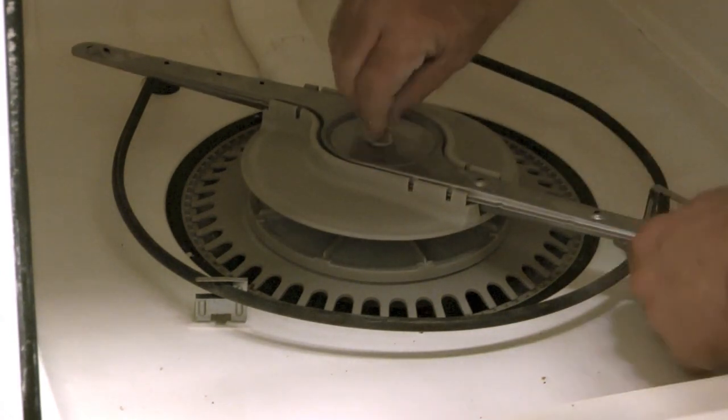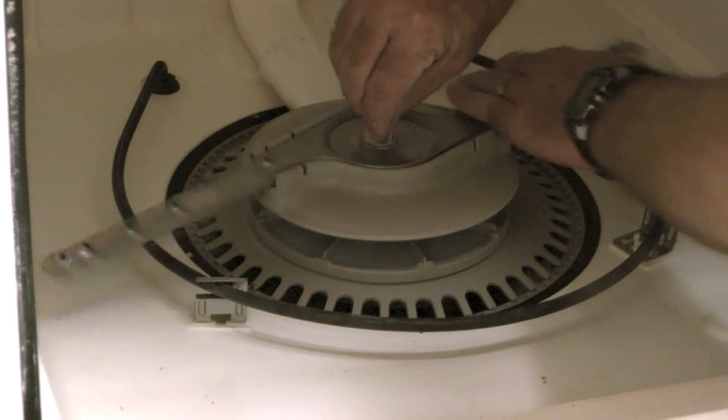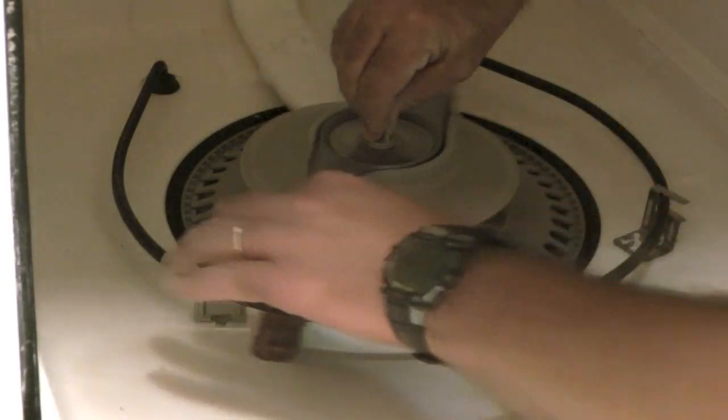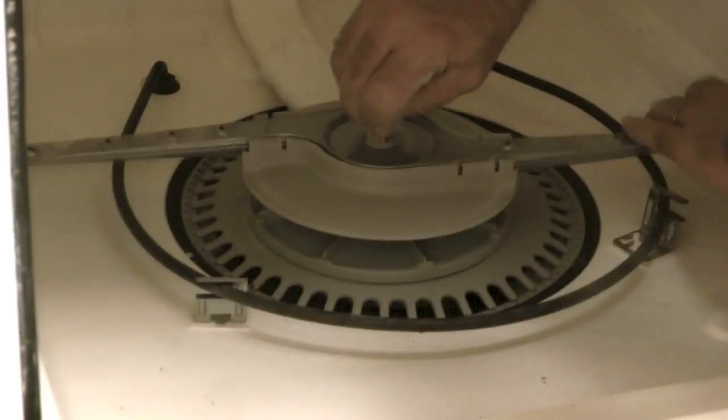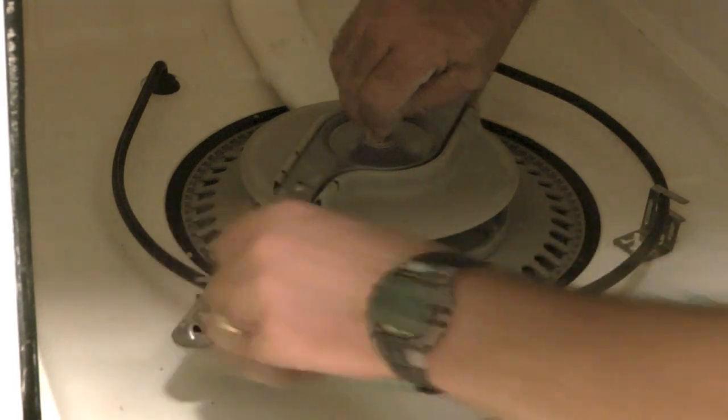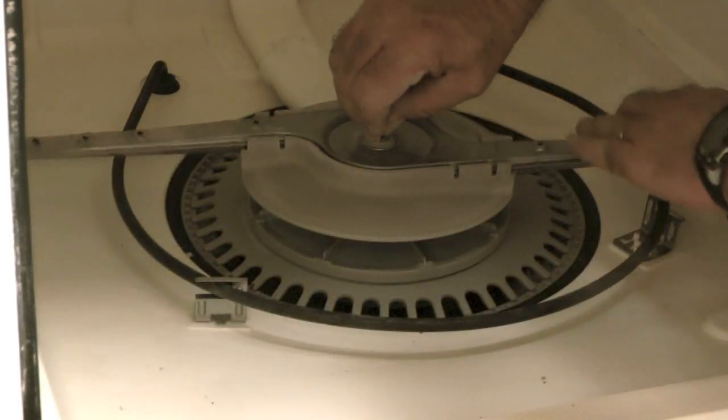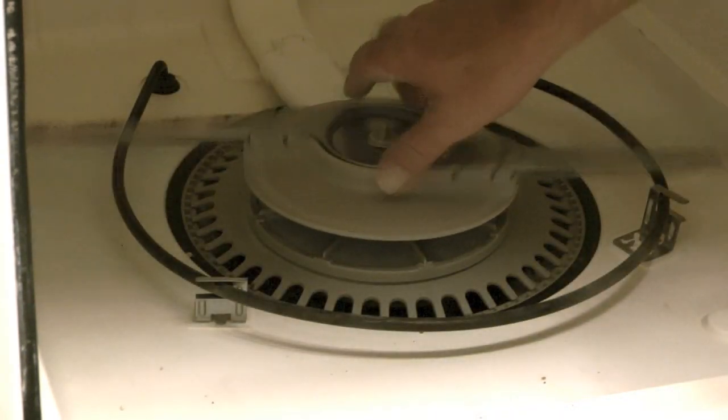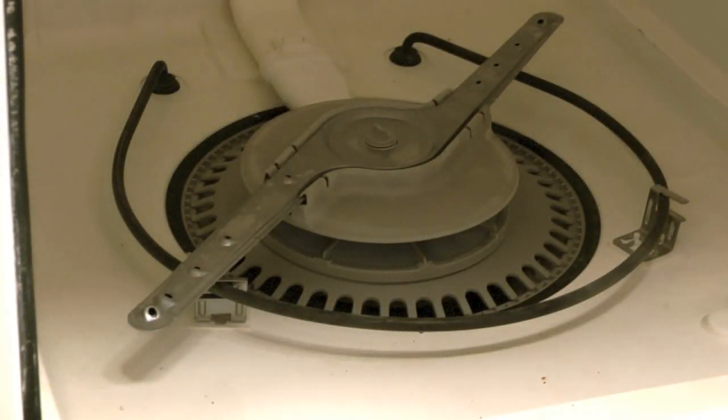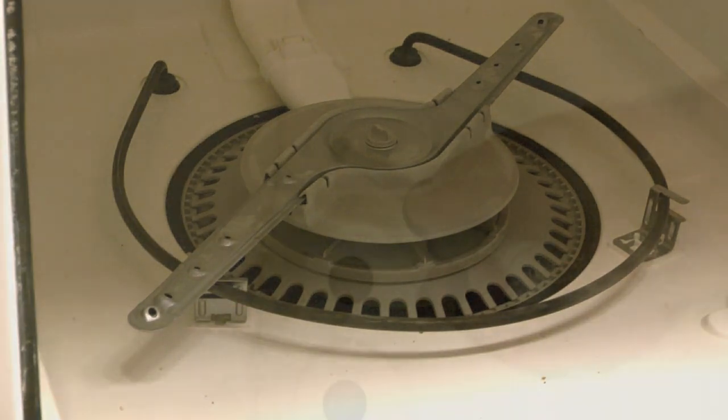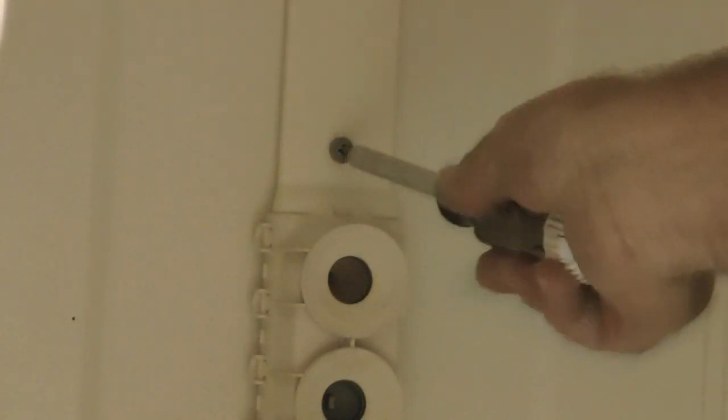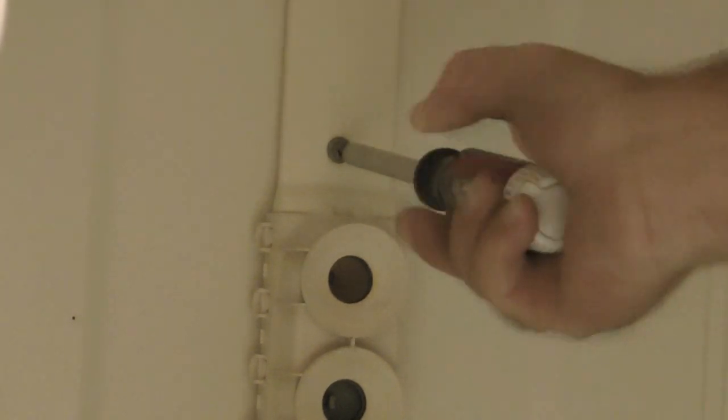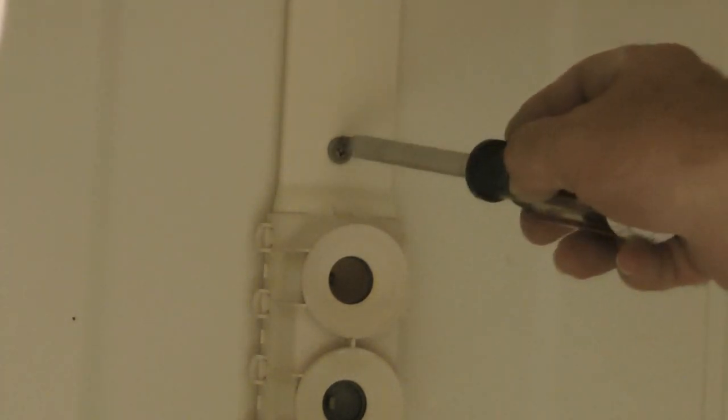Next I will take the lower spray arm, hold the nut in place and twist clockwise until it tightens on the nut. Then I will give it a good spin to make sure it spins freely. Next I will take the two screws and reinstall them into the water supply tube.